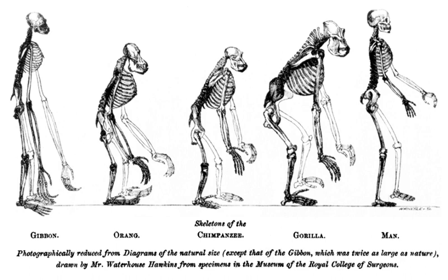A rooted phylogenetic tree is a directed tree with a unique node—the root—corresponding to the most recent common ancestor of all the entities at the leaves of the tree. The root node does not have a parent node, but serves as the parent of all other nodes in the tree. The root is a node of degree 2 while other internal nodes have a minimum degree of 3, where degree refers to the total number of incoming and outgoing edges. The most common method for rooting trees is the use of an uncontroversial outgroup, close enough to allow inference from trait data or molecular sequencing, but far enough to be a clear outgroup.